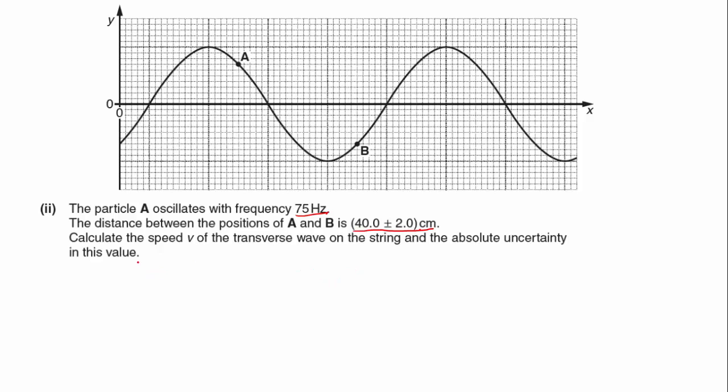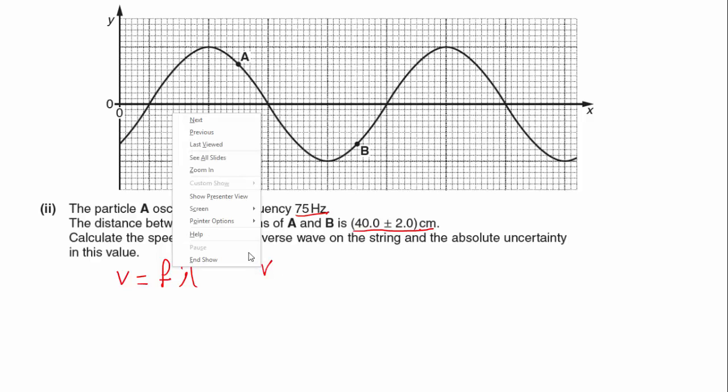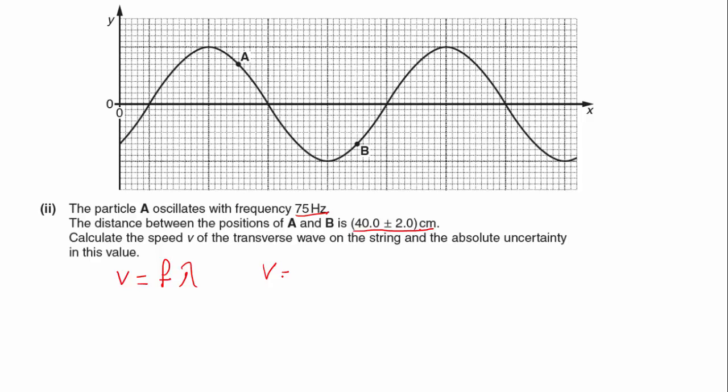Okay, so I would say that we would need to go V equals F lambda, where V is the speed of the wave. If we take our wave, so V equals 75.